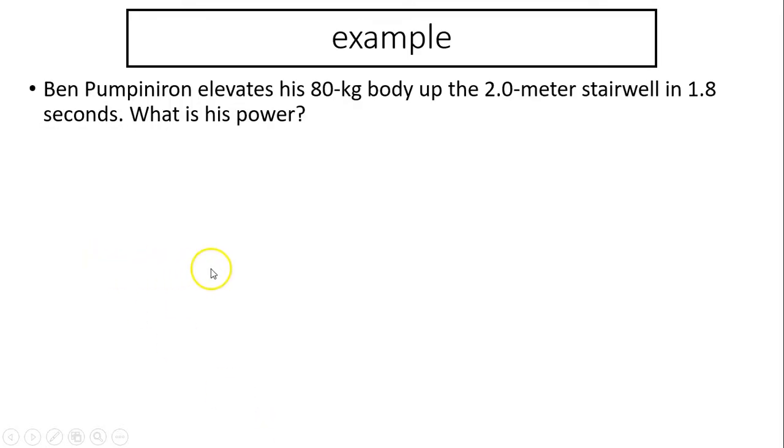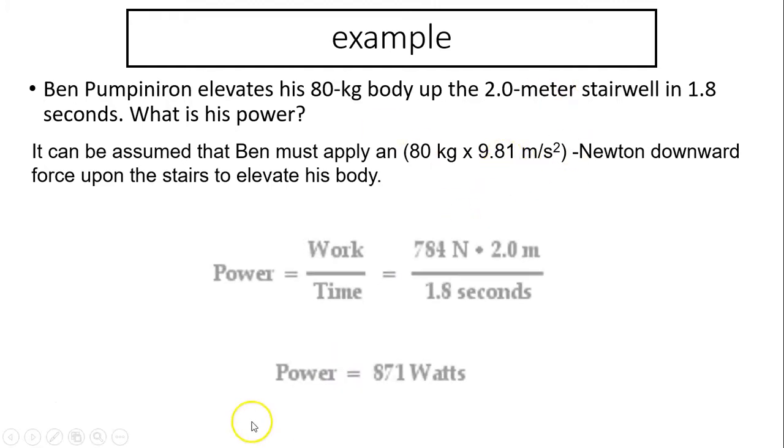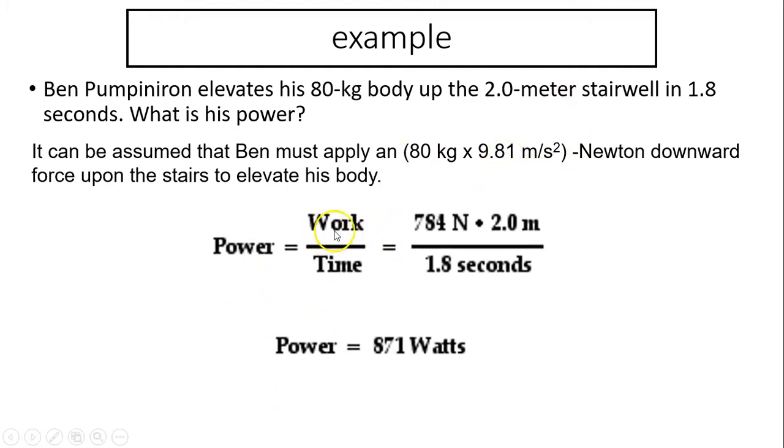Let's take a look at this example. Ben Pumpingiron elevates his 80 kilogram body up the two meter stairwell in 1.8 seconds. What is his power? Let's think about it. For him to elevate his body up the stairwell, the minimum force he has to apply is his weight, and his weight is mg. So power is work. Work equals force times distance, the force is his weight, and the distance is two meters divided by the seconds. So after you calculate it, you should have 871 watts.